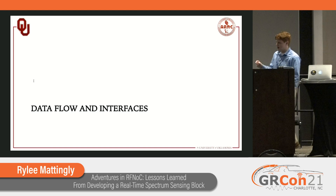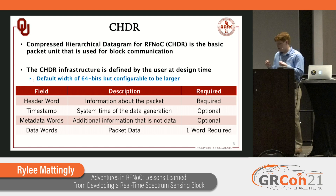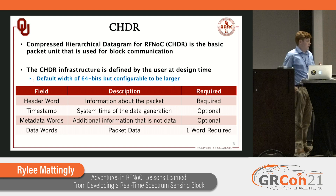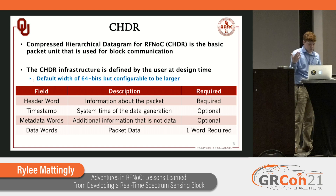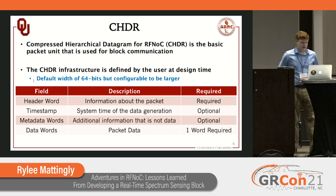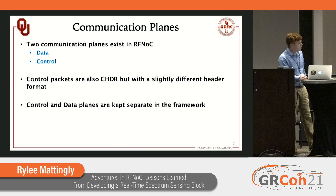We know what we're trying to do in the FPGA, but before we can develop an FPGA block, we need to know what the data flow looks like and what the interfaces are. RFNOC uses a CHDR packet as the basic data packet — it stands for Compressed Hierarchical Datagram for RFNOC. The CHDR infrastructure can be variable width; by default it's 64 bits. Each packet has a header word with information about the packet, an optional timestamp field, optional user-defined metadata words, and at least one data word per packet.